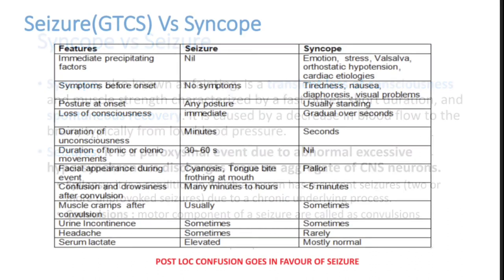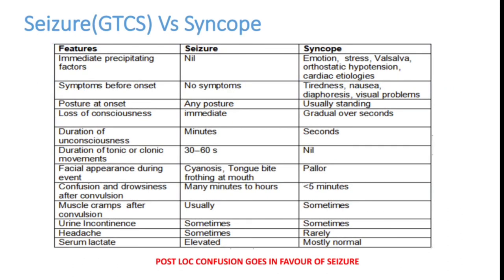We will see the differentiating features between seizure and syncope, as this is a very common presentation to the emergency room. Regarding precipitating factors: in seizure there may not be any, but in syncope the patient can have a history of stress, emotional disturbances, Valsalva manoeuvre, or orthostatic hypotension — such as suddenly standing up from a sitting posture.